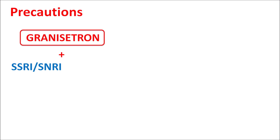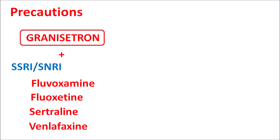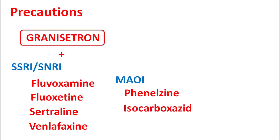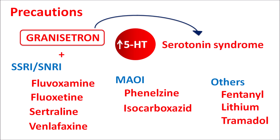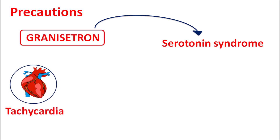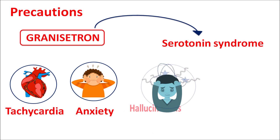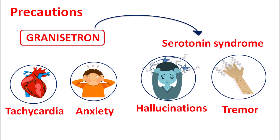When combined with SSRIs or SNRIs — such as fluoxetine, sertraline, or venlafaxine — or MAO inhibitors such as phenelzine, isocarboxazid, or tranylcypromine, or other drugs like fentanyl, lithium, or tramadol, which increase 5-HT levels in the CNS, Granisetron can precipitate serotonin syndrome. Symptoms to monitor include tachycardia, increased anxiety, agitation, hallucinations, muscle spasms, and tremor.